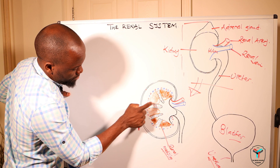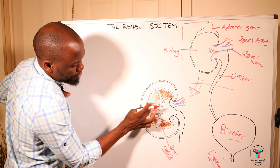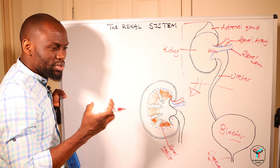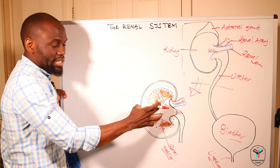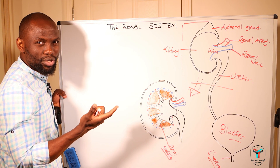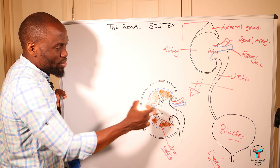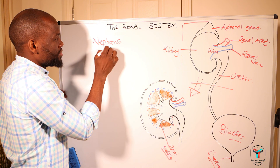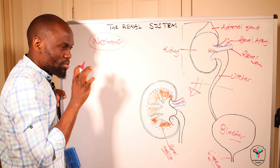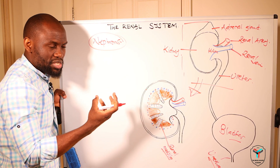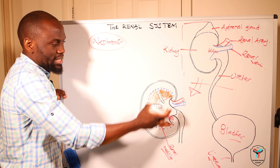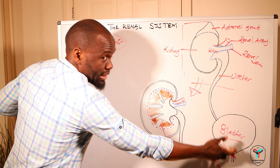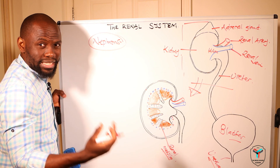These brownish folds that appear in the medulla are what we call the renal pyramids. The renal pyramids are important parts of the kidney because they house the most functional units of the kidney, which we call the nephrons. The nephrons are responsible for the filtration of blood circulating through the kidney to form urine, which then travels to the bladder and out to the external environment.